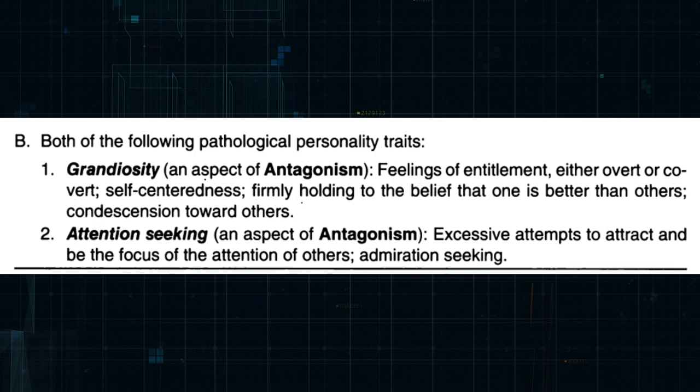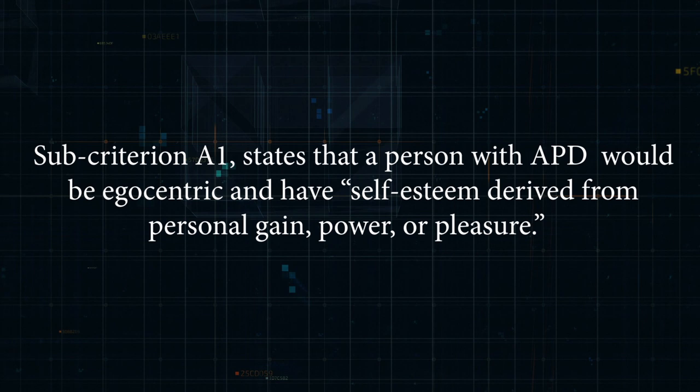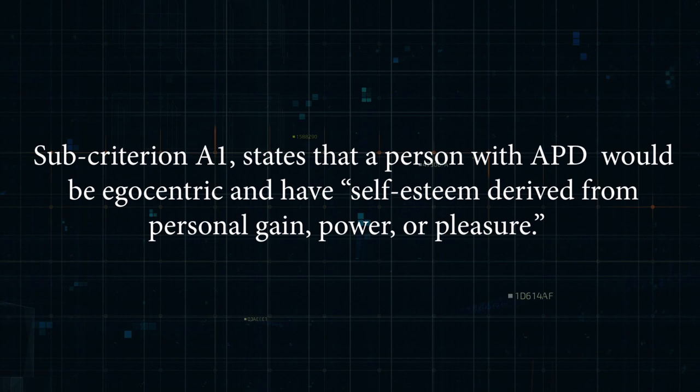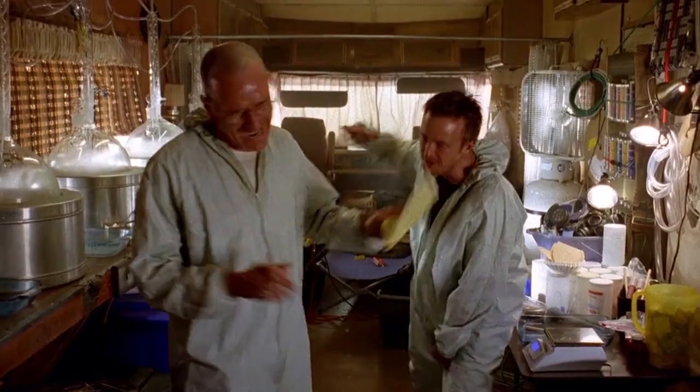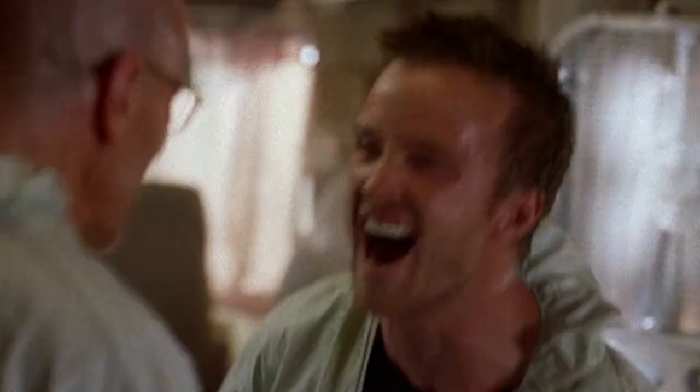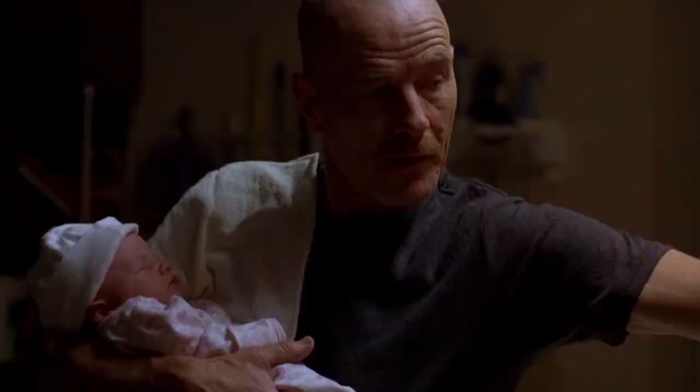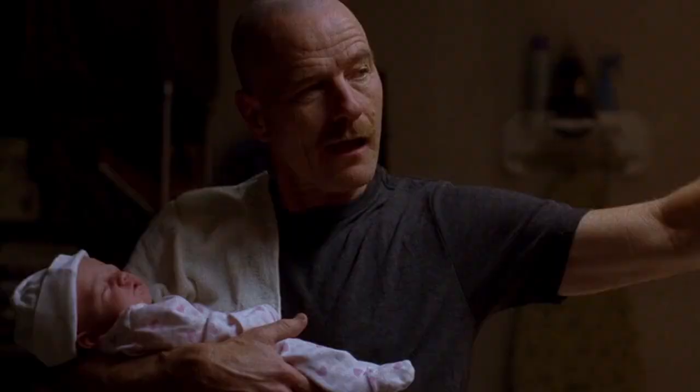Subcriterion A1 for APD states that a person with APD can have self-esteem derived from personal gain, power, or pleasure. An example was when Walt was unable to view Jesse's perspective regarding his unwillingness to work with him — although Walt offered Jesse $1.5 million, Jesse still did not want to work with him because of how much he had lost, which took Walt by surprise. Walt was also unable to see Skyler's perspective regarding the importance of keeping up their lie about where he was getting his money. Some examples of when Walt's self-esteem physically rises due to gaining money can be seen when Jesse and Walt successfully cooked 42 pounds of meth and when Walt showed Holly the money he had earned. Walt also bought two new cars.